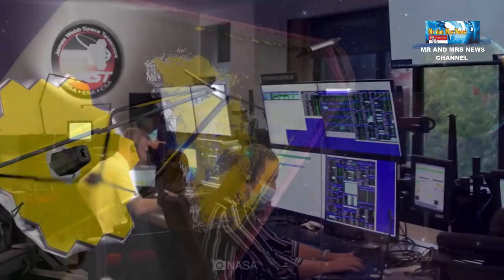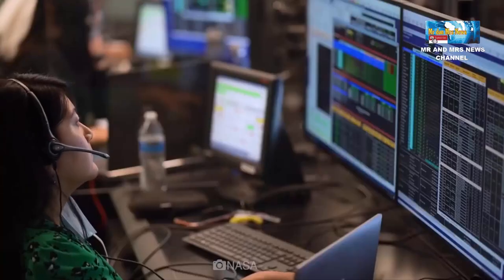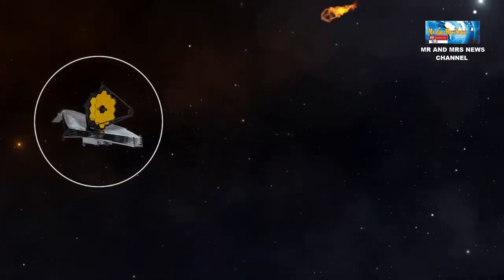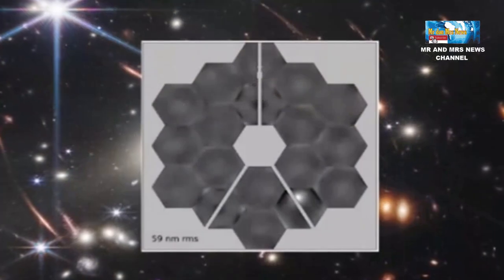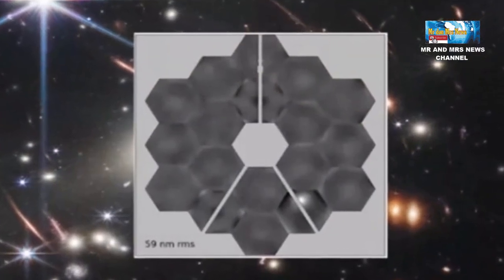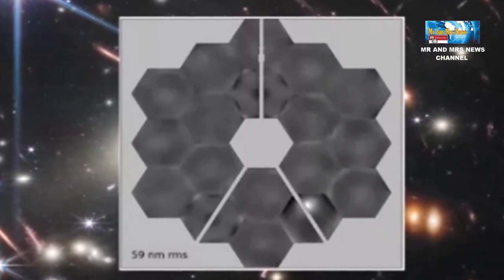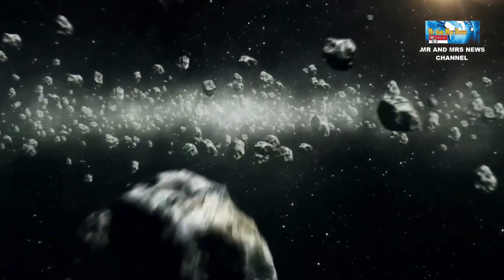Sebenarnya, sebelum diluncurkan, para insinyur sengaja memukul sampel cermin dengan benda berukuran mikrometeoroid untuk menguji bagaimana dampak tabrakan meteor akan mempengaruhi kinerja teleskop. Yang tidak terduga, meteor yang menabrak ukurannya jauh lebih besar dari benturan uji coba yang dilakukan para insinyur pembuat James Webb tersebut.